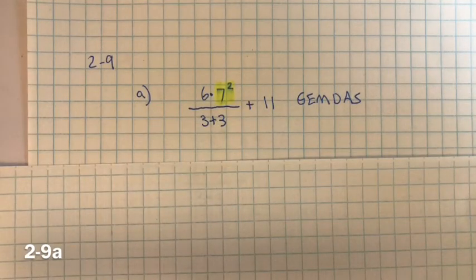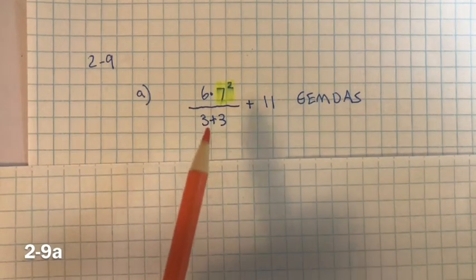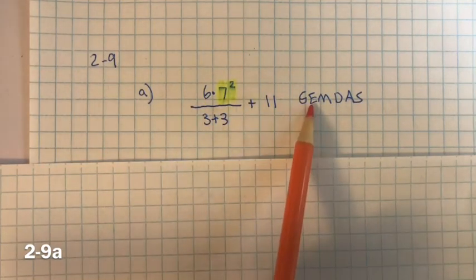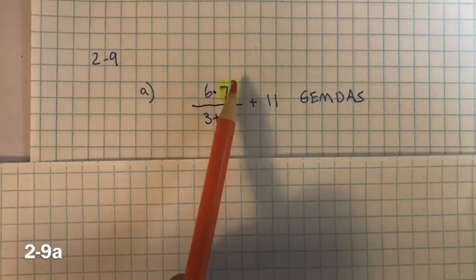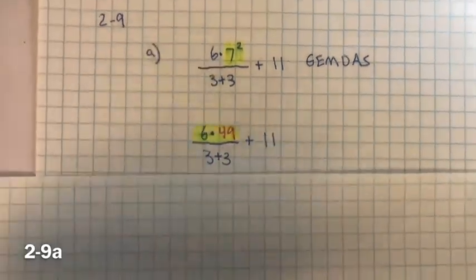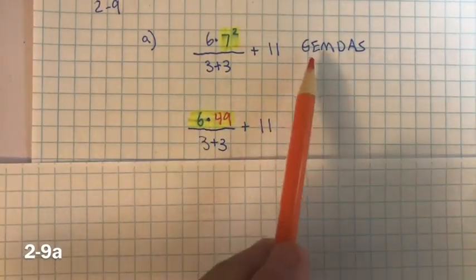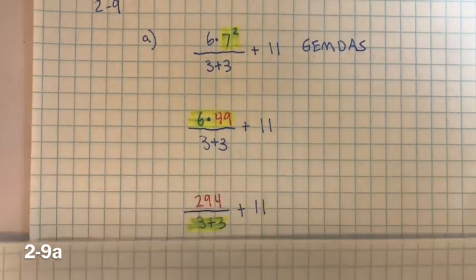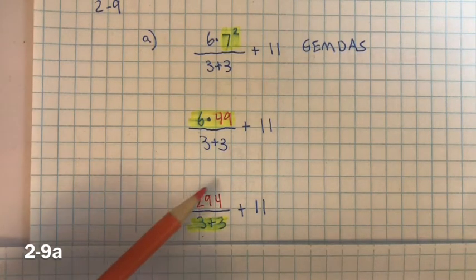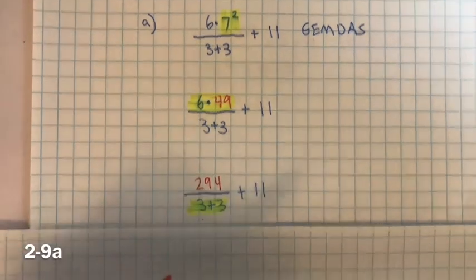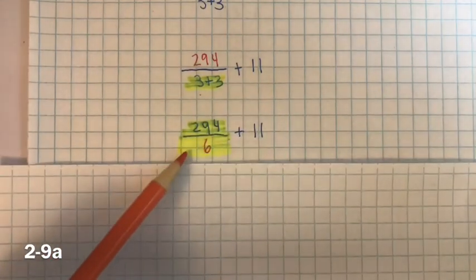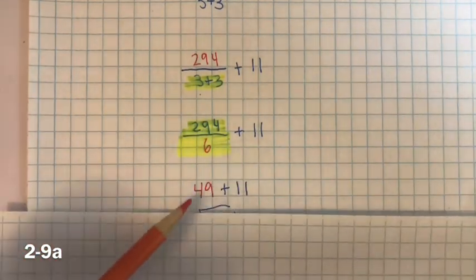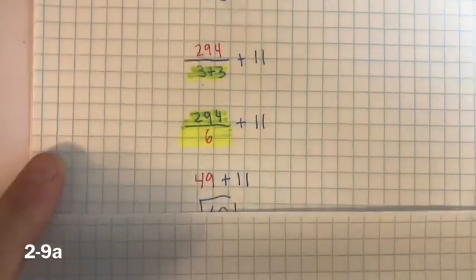Problem 2-9. You need to calculate the value of each expression following order of operations, GEMDAS. For 2-9A: no grouping symbols, but we do have an exponent, so simplify 7 squared — which is 7 times 7 equals 49. Now do multiplication: 6 times 49 equals 294. Then the denominator: 3 plus 3 equals 6. Now simplify the ratio: 294 divided by 6 equals 49, and 49 plus 11 equals 60.